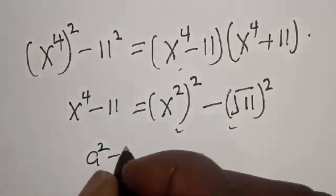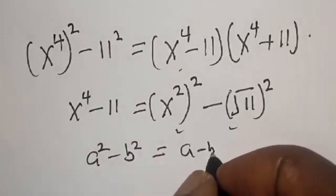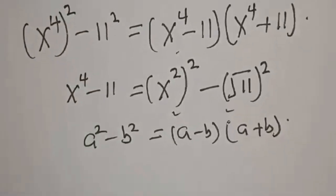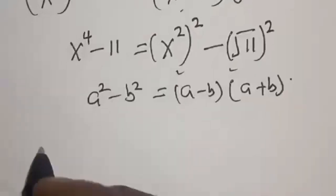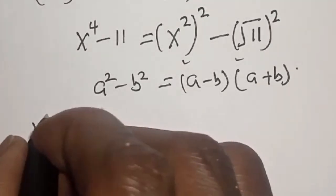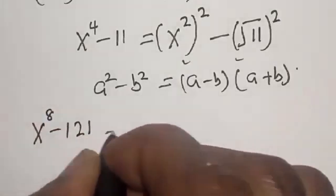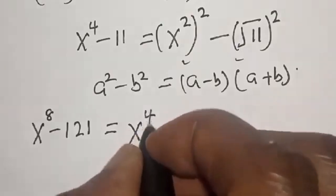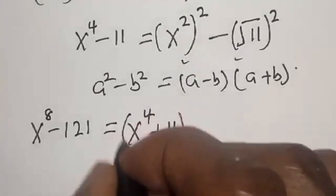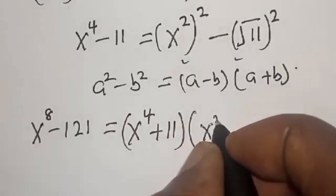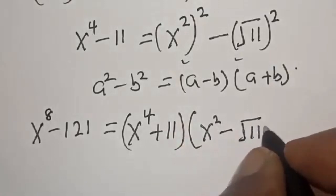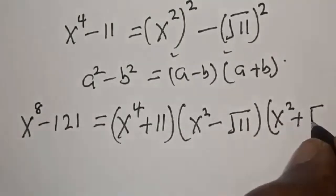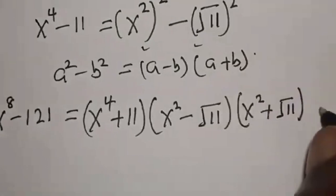That is, A squared minus B squared equals A minus B multiplied by A plus B. Now we have s raised to power 8 minus 121 is equal to s raised to power 4 plus 11, multiplied by s squared minus square root of 11, multiplied by s squared plus square root of 11, equal to 0.